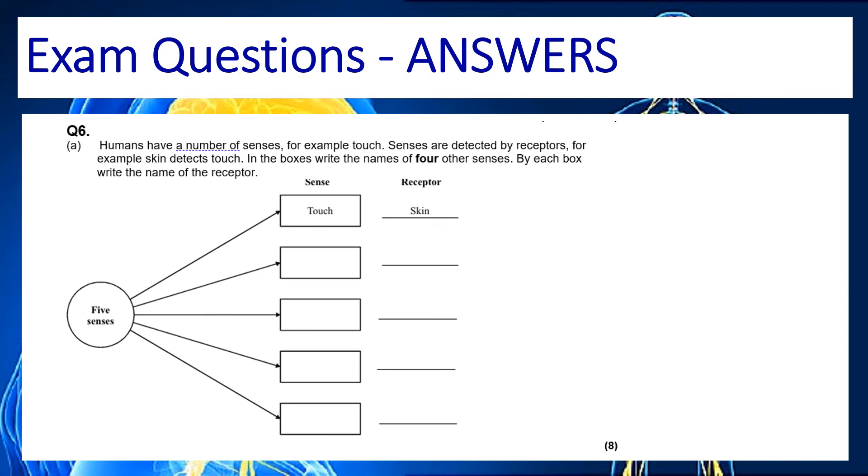So this question wants us to name the five senses touch is already there so we would have sight is our next one we've got sound we've got smell and we've got taste and then we've been asked because it's quite an easy question to say what that receptor is so we know that sight happens in the eyes we know the sound happens in the ear we know the nose does smell and we know the tongue does taste.